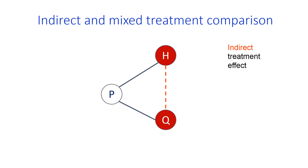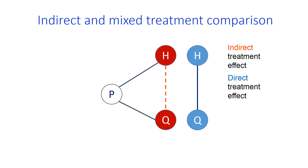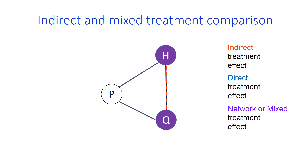In a larger network of treatments, there is not necessarily only one indirect path from one intervention to another. In a full network, indirect evidence about haloperidol versus quetiapine can be obtained via multiple routes by combining the direct estimates that each path involves. Additionally, when direct evidence about haloperidol and quetiapine is available, it is possible to synthesize it with indirect evidence into a single powerful pooled estimate, which is termed the network treatment effect.